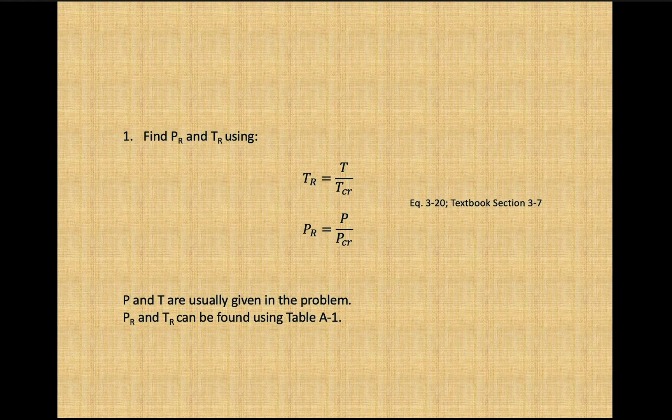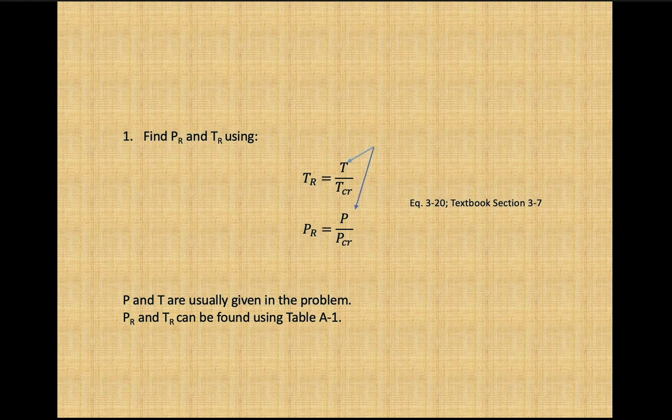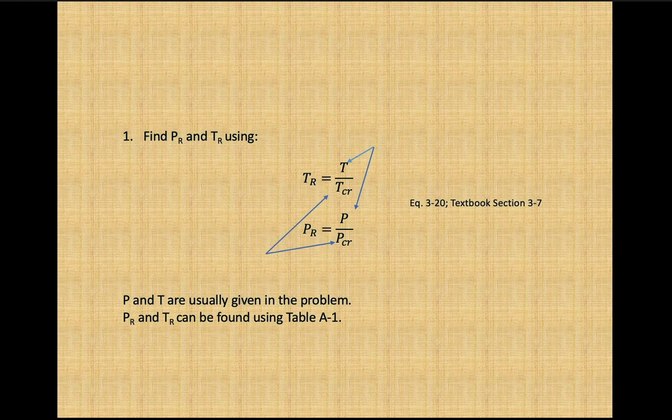The following equations are found in section 3-7 in the textbook. The numerator pressure and temperature is usually given with a problem. The critical pressure and critical temperature values can be found on table A-1.